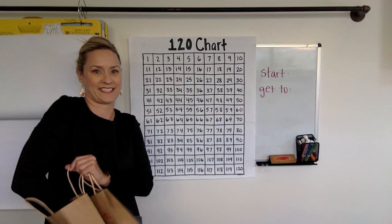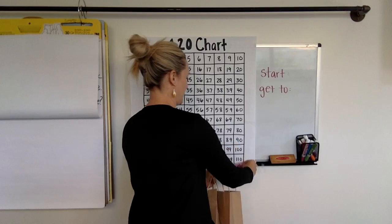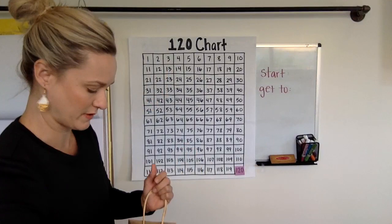Just have to pull out one number. Okay, here it is. Alright, I pulled out 120. That's going to be our starting number. And then we are going to get to, let's see what we're going to get to.